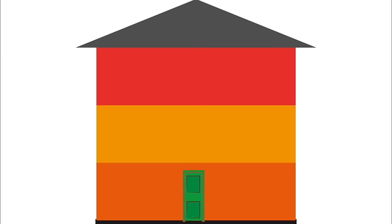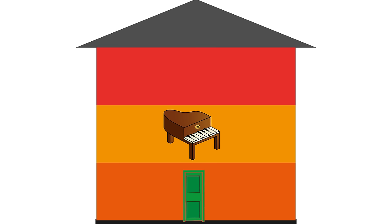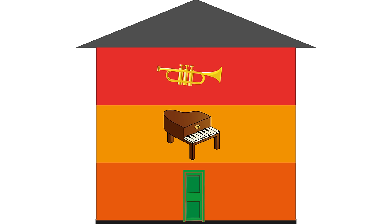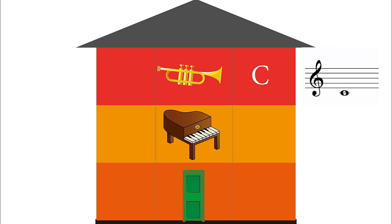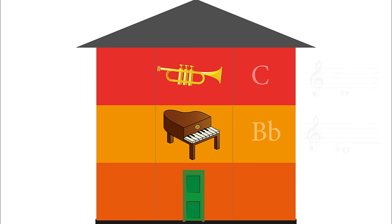Imagine a house. There are three floors. On the middle floor lives a piano, and on the floor above lives a trumpet. When the trumpet plays a C, the piano needs to play a Bb to produce the same note. And that is why the trumpet is called a Bb trumpet.